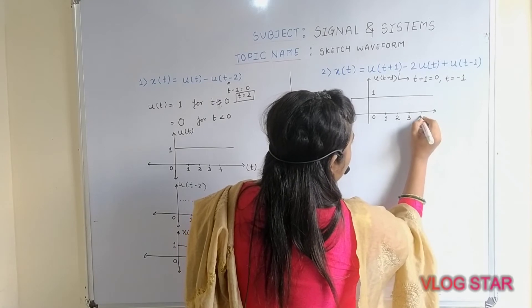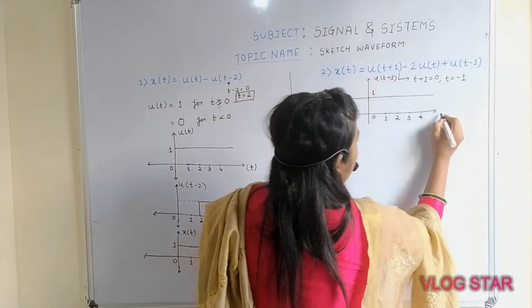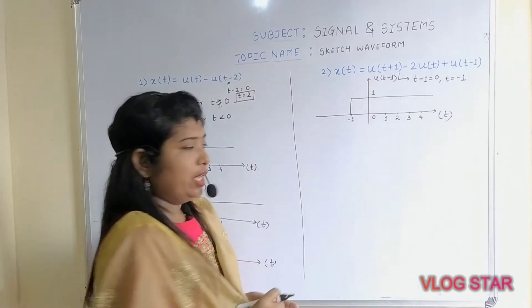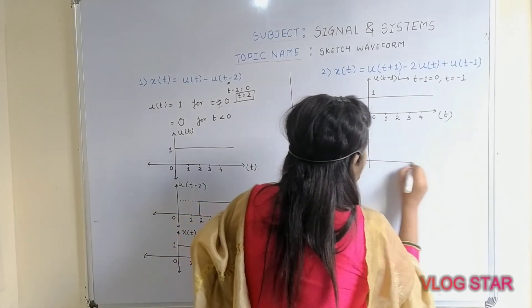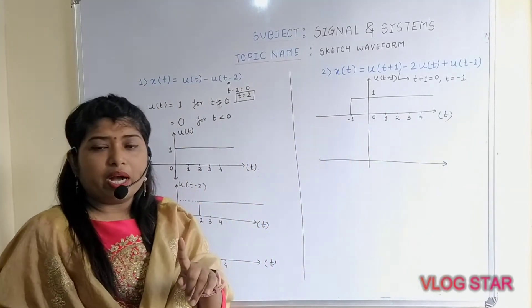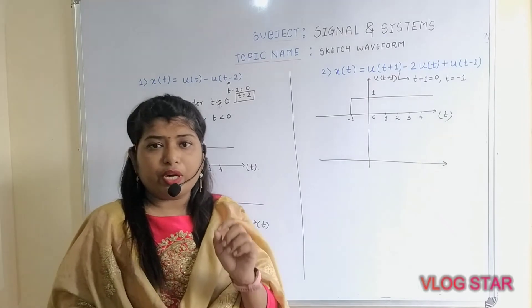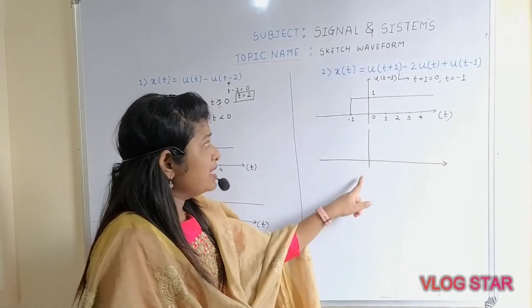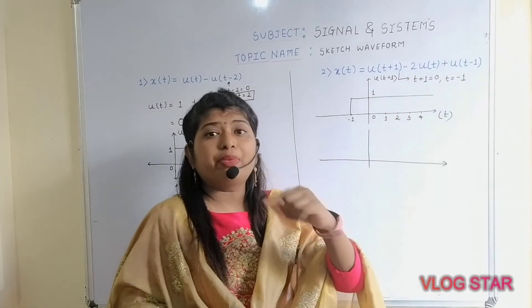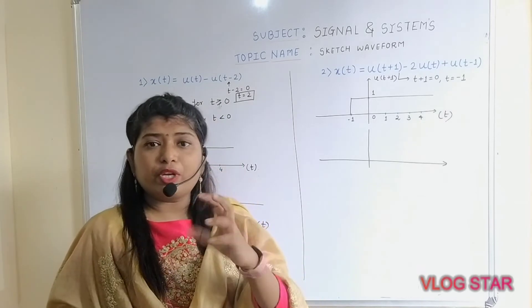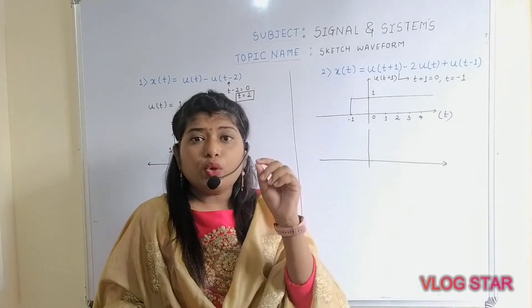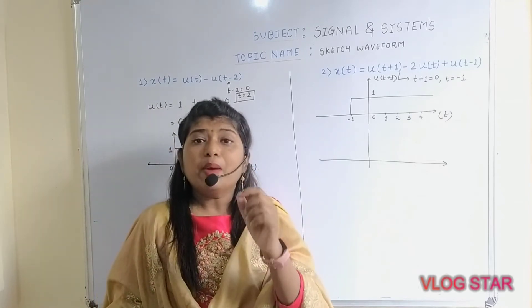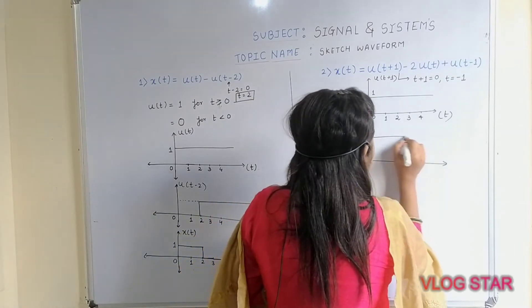Similarly, you have to plot 2·u(t). As per the definition of the unit step signal, u(t) = 1 for t ≥ 0, and 0 for t < 0. In this case, you have to perform amplitude scaling — multiply the unit step signal's amplitude by 2.